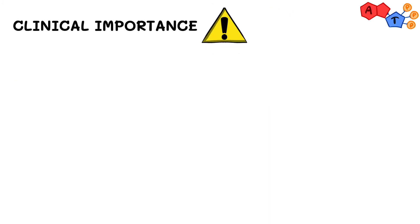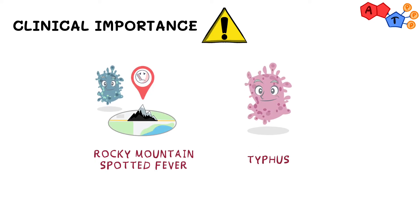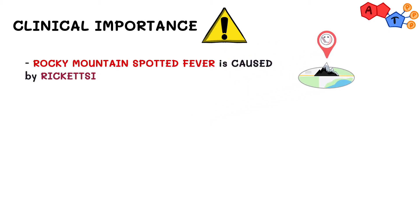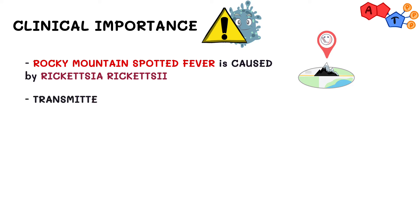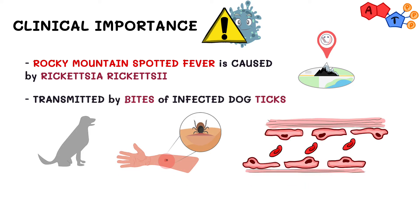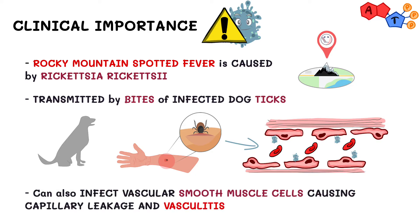Rickettsia species are known to cause two common diseases, including Rocky Mountain spotted fever and typhus. Rocky Mountain spotted fever is caused by Rickettsia rickettsii, which is transmitted by bites of infected dog ticks. Rickettsia spreads via the bloodstream to infect the endothelium from the portal of entry in the skin, and sometimes they infect vascular smooth muscle cells, resulting in capillary leakage and vasculitis.